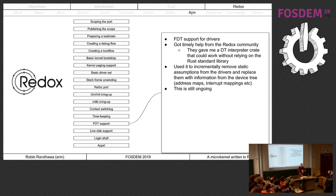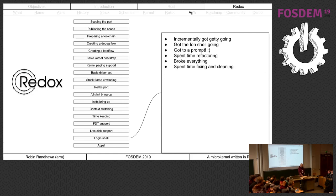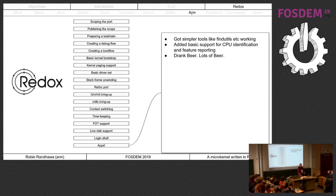I then fleshed out supporting system calls with some optimizations, got init scripts going, context-switching code - rinse and repeat. Interrupt controller, timers, scheduler hooks, FDT drivers - I changed all the raw drivers to use FDT (Flattened Device Tree, which abstracts the kernel from platform-specific things like interrupt numbers). Started using live disk support to build a simple structure that doesn't need a disk controller yet. Then login shells worked, I got getty going, and ion without too much trouble - and then everything just worked. I added some CPU identification stuff, and then I drank a lot of beer.